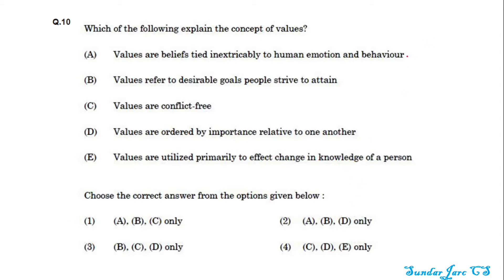A is correct, B is correct, C — values are conflict-free — is wrong, and D is correct, and E is wrong. So the correct options are A, B, and D.